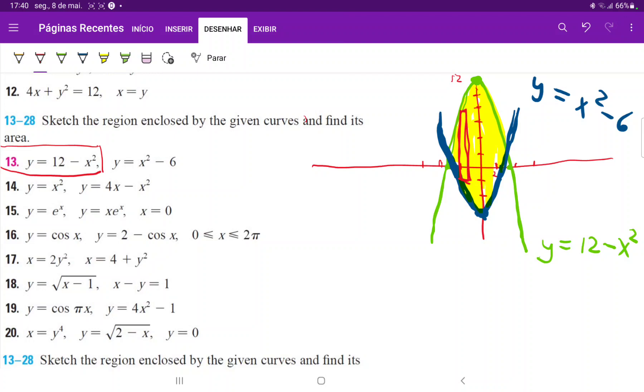So each rectangle, let's draw out our representative rectangle. The width is dx for a little piece of the x-axis. And then the height is just the upper function minus the lower function. So the upper function should be 12 minus x squared, and then minus x squared minus 6.